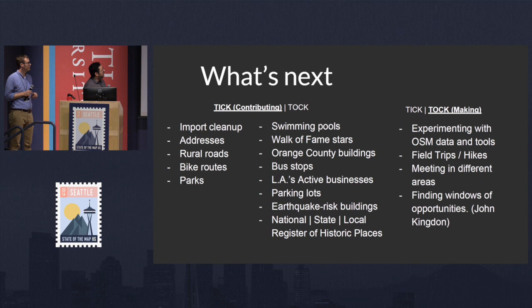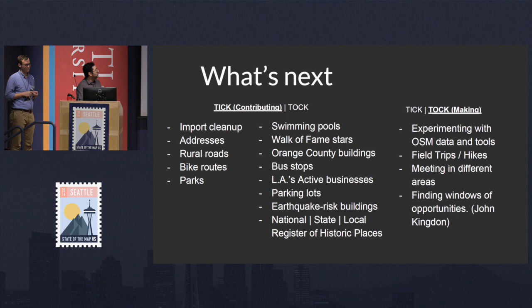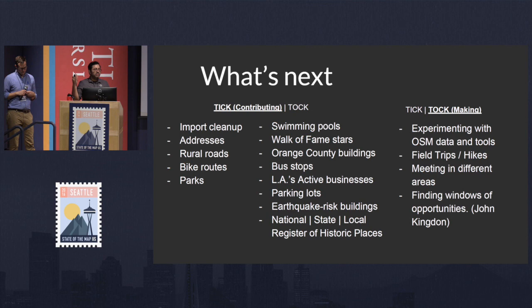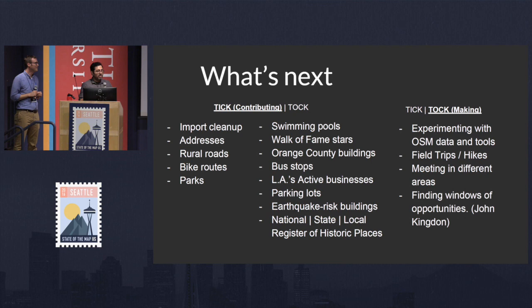These are items we'll continue on right after the imports. There's a huge list from the national, state, and local register of historic places sitting on state websites, and we can start adding that information with the buildings we have. Then making stuff with it — experimenting with OSM data and tools. Making field trips and hikes, meeting in different areas, because LA is huge and it takes many moons to get to Santa Monica. Meeting in different areas would help bring other people together. And finding windows of opportunity — especially with recent earthquakes; there was one small earthquake that spooked LA, and we started planning a night where we could add buildings and map our neighborhood in terms of what earthquakes would do.